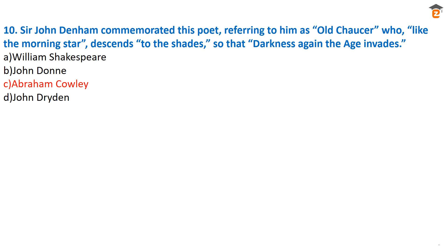The last question of part one: Sir John Denham commemorated a poet, referring to him as 'old Chaucer, who like the morning star descends to these shades, so that darkness again the age invades.' About whom did Sir John Denham say this? The answer is option C — Abraham Cowley. Abraham Cowley was the poet to whom this phrase was dedicated by Sir John Denham in his book.